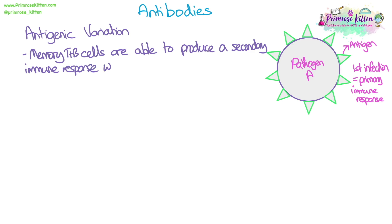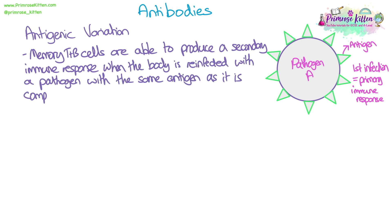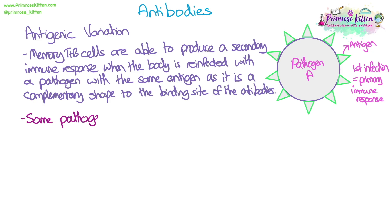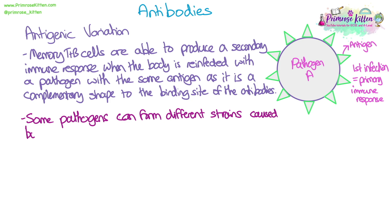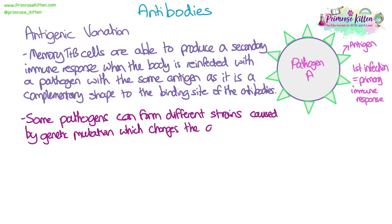Memory B cells are able to produce a secondary immune response when they encounter a pathogen with exactly the same antigens as before. This is because the antibodies that memory B cell produces have a complementary shape to that antigen. Some pathogens form different strains — for example, the influenza virus is still the same virus but a different strain because minor genetic mutations change the shape of the antigens on the surface of that pathogen.